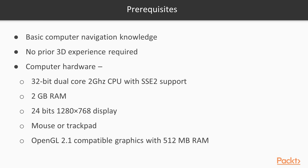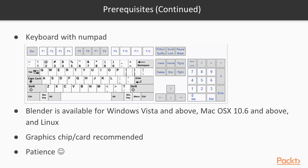Moving on to the requirements for this course, basic computer navigation is required such as unzipping zip files, downloading stuff and just the standard day-to-day things. We also have some computer hardware requirements such as the minimum and recommended hardware. In regards to a keyboard we will be using the numpad, however you can simply go into the user preferences and emulate a numpad if you're working on a laptop.